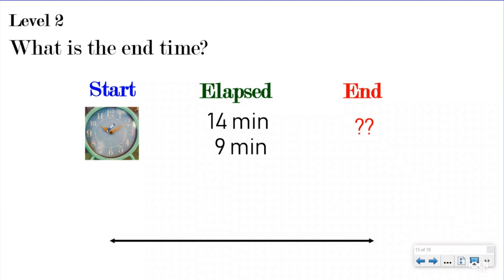My hour hand is pointing at the 10, but my minute hand isn't at 12 - it's a little bit past 12. My hours are going to be 10. Each interval is split into five minutes, so counting: 5, 10. Looking closely, it's pointing directly at the 2, which is 10 minutes. So my start time is 10:10. Now that I've done that step, that's the only difference - this is now just a Level 1 question.